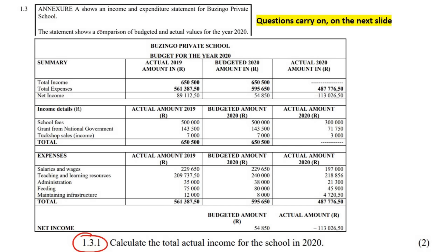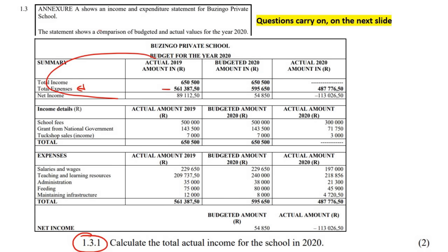Calculate the total actual income for the school in 2020. So we're looking for the total actual income. They're wanting us to find this value over here. The way that it works is, if you look carefully — for example, if you have a total income of $650,500 and then your expenses are $561,000, then if you just subtract these two from each other, because the expenses are money going out, that should give us your total profit that the school makes for that particular year. You can go type that on the calculator to check it. This row up here is like the summary of everything, so you could ignore all the detail below.